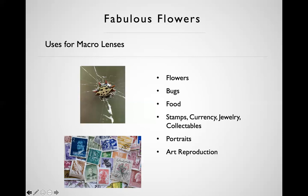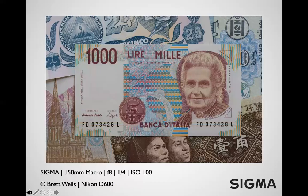Macro lenses tend to be flat-field and very rectilinear, so a 50-70mm macro is quite often an appropriate lens for reproduction work — artwork or other flat subjects. For currency, you want a little bit of depth of field at something like f8 to cover any surface deviation even on a relatively flat subject.